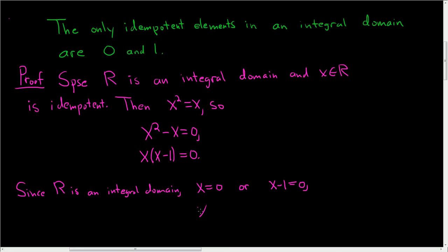So x is equal to 0 or x is equal to 1. And we've shown that the only idempotent elements in an integral domain are 0 or 1. I hope this video made sense. Thank you very much.